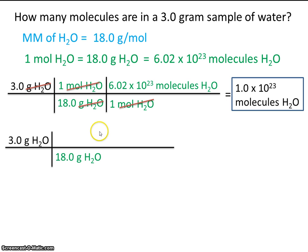And we're trying to get, of course, to molecules. So if we have 18 grams of water, isn't 18 grams of water equal to 6.02 times 10 to the 23rd molecules of water?